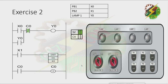This will be my answer to this exercise. Let's press PB1 — Y0 will turn on. And as you can see, there's a latching here. That's why Y0 will not turn off. The only way to turn it off is by turning on C0, and to turn on C0, we need to press X1 two times.